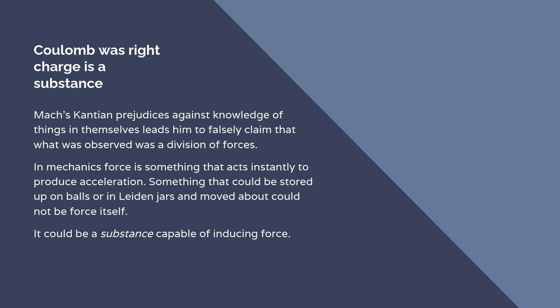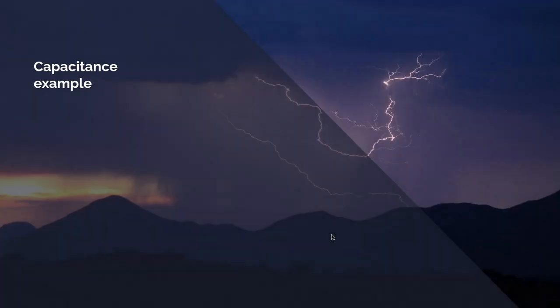In mechanical theory, from Newton on, force is something that acts instantaneously to produce acceleration. Something that can be stored up in balls or in a laden jar and moved about can't be force itself. It can only be a substance capable of inducing force. And of course, we now know that electric charge is a substance. It's carried by electrons which actually have mass and can be observed. The second example is also obviously electrostatic and again relates to capacitance. And why is that example wrong?